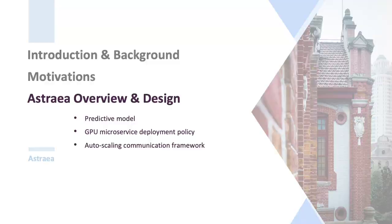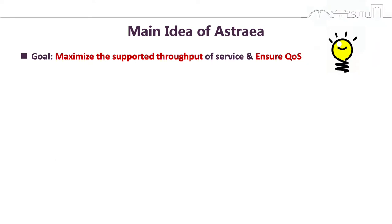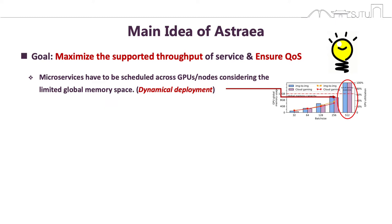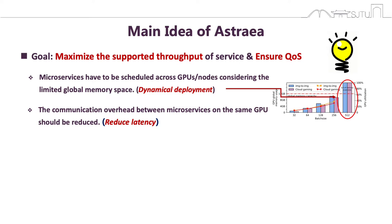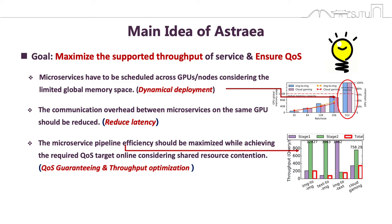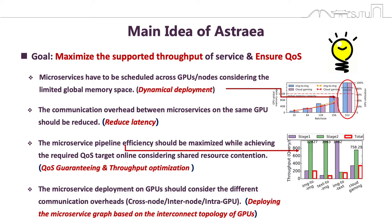Now we will introduce the main methodology of this work. Our goal is to maximize the supported throughput of service and ensure the required latency target. Based on our characterization study, we designed Astria following four principles. First, microservices have to be scheduled across GPUs or nodes, considering the limited global memory space. Second, the communication overhead between microservices on the same GPU should be reduced. Third, microservice pipeline efficiency should be maximized while achieving the required QoS online. Fourth, the microservice deployment on GPU should consider the different communication overheads across nodes, across GPUs on the same node, and on the same GPU.